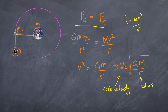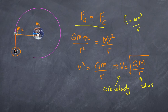This applies to any system. For example, to find the orbital velocity of the earth around the sun, you only need to know the mass of the sun and the earth's distance from the sun. It all stems from the fact that the gravitational force equals the centripetal force.